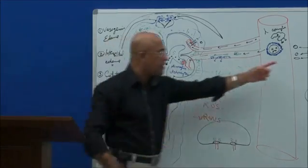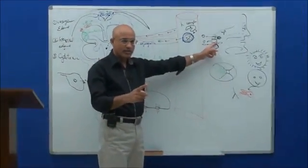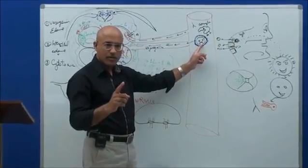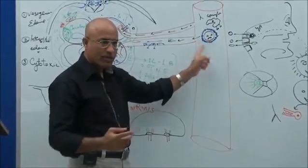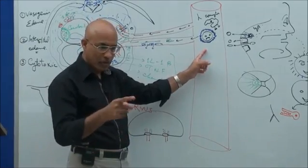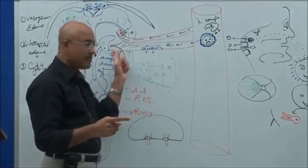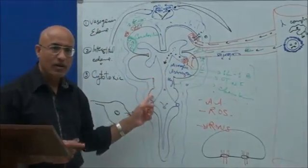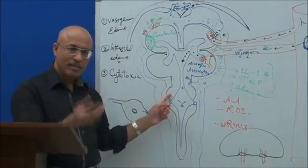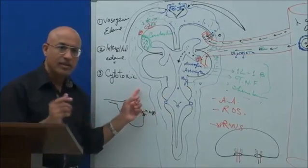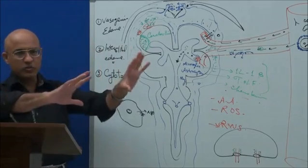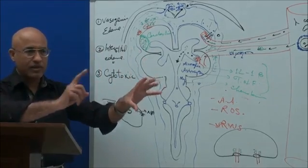Now you will tell me the steps. Step number one is colonization. Step number two is migration through mucosa up to the circulatory system. Number three is survival in circulation. Number four is migration to CSF. Number five is survival and multiplication in CSF. Number six is release of toxins.